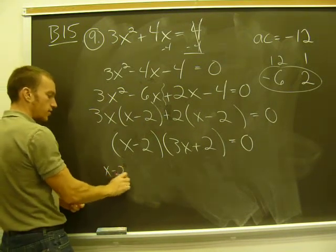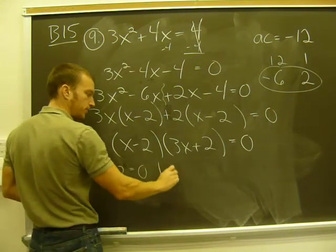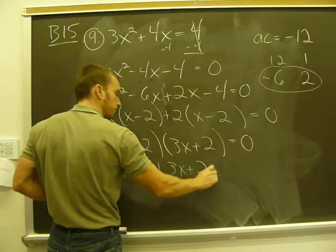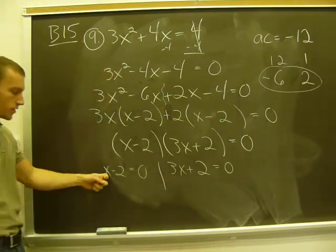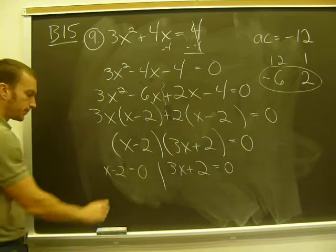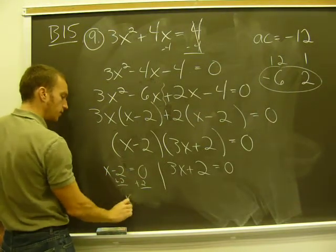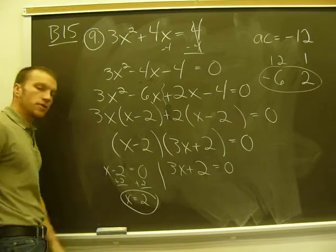Now I set each of these to 0 using that zero product principle. And get my two solutions. If x minus 2 is 0, then x, of course, would be 2. There's one solution.